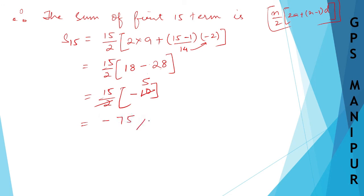So the sum of the first 15 terms is minus 75. That's all. Thank you so much. We will meet in the next video.